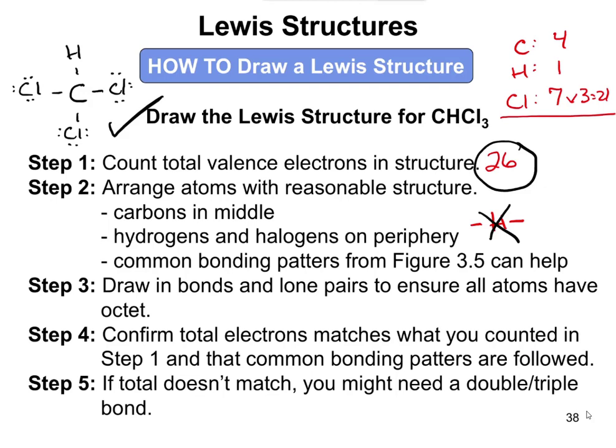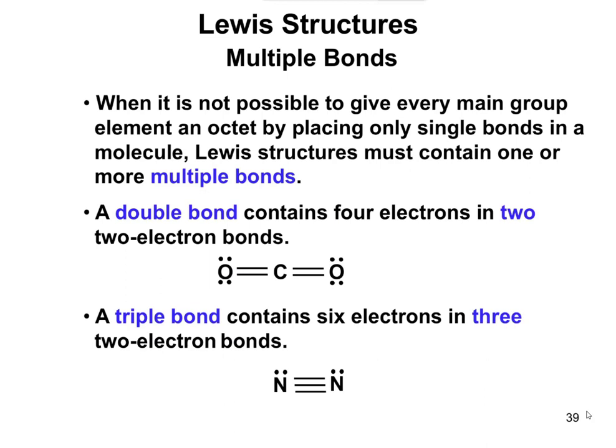If the total doesn't match, you go to step five: you might need a double or a triple bond. You might need to draw a double or triple bond between two atoms. These multiple bonds can come up whenever it's not possible to make everything match, and sometimes it's necessary to give atoms their particular bonding patterns.